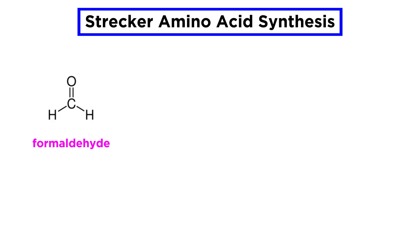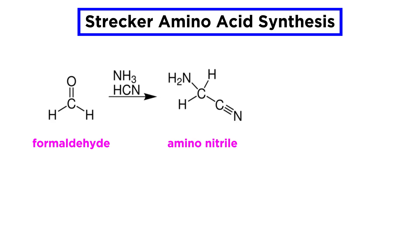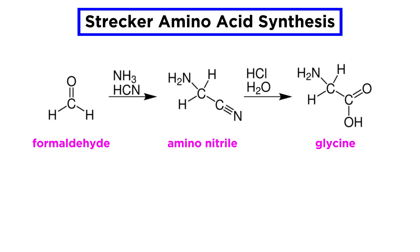Strecker discovered that heating a mixture of an aldehyde, such as formaldehyde, with hydrogen cyanide and ammonia, led to an aminonitrile, which could then be hydrolyzed at the nitrile to produce an amino acid, in this case glycine.